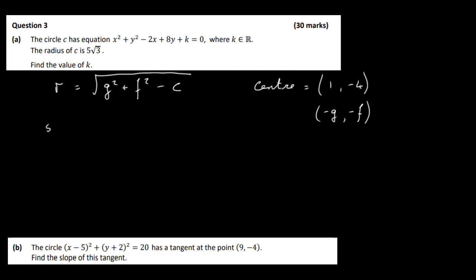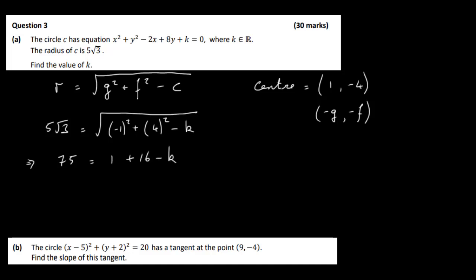Our radius is 5 root 3. We get the square root of g squared — g is minus 1, we square that — plus f squared, f is plus 4, we square that — minus c, and c is k, so it's minus k. We solve this: squaring both sides gives 25 times 3, which is 75. On the right side we get 1 plus 16 minus k.